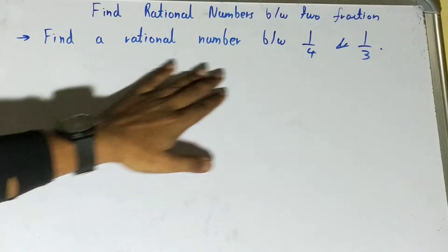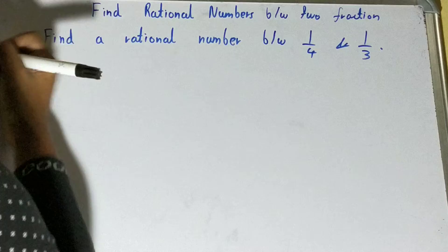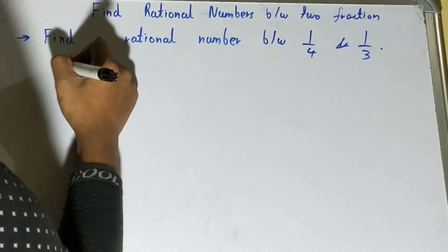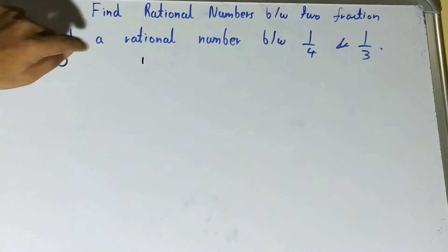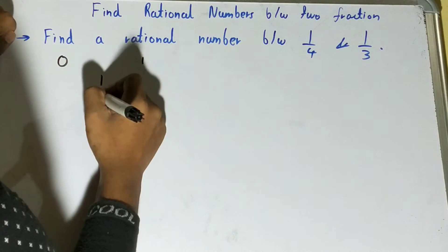Let's say we have to find only one rational number, so we can understand this concept. Between zero and one, if you need to find a middle value, you can take it as one by two.